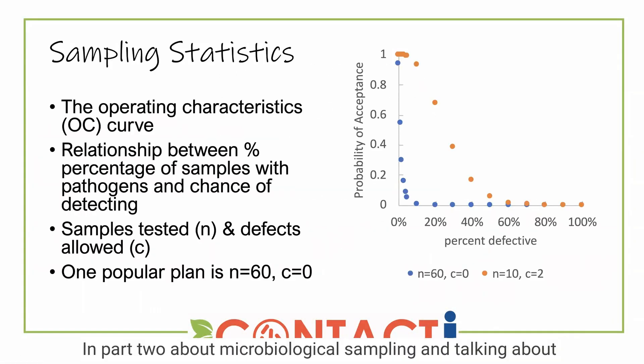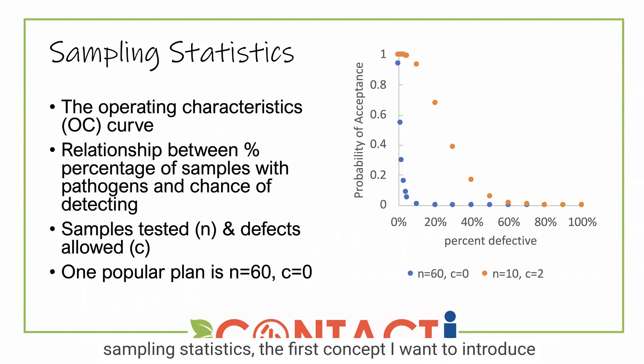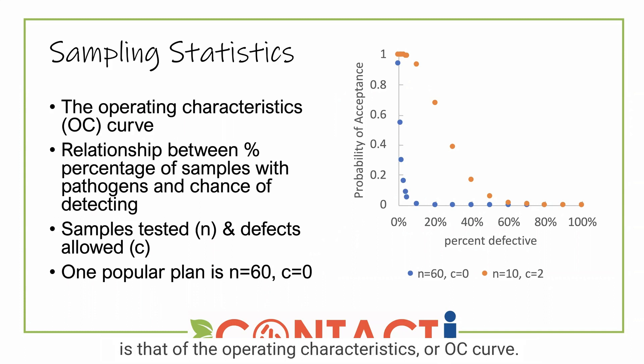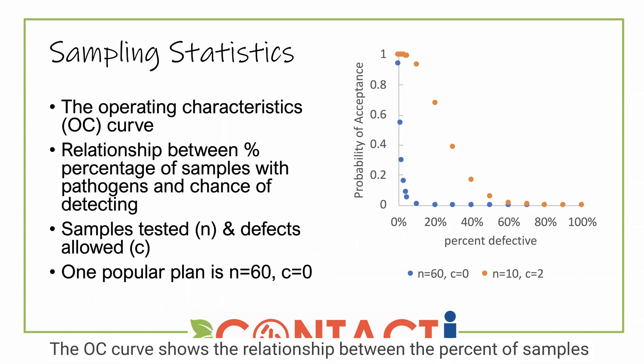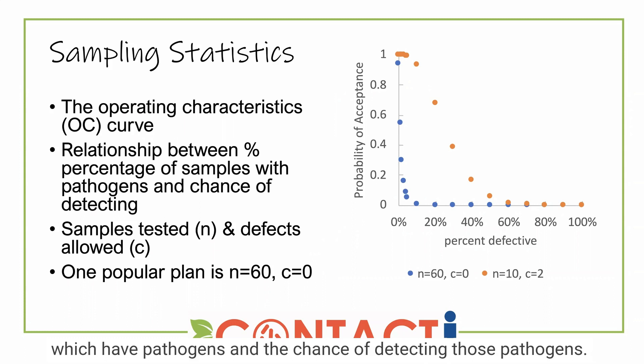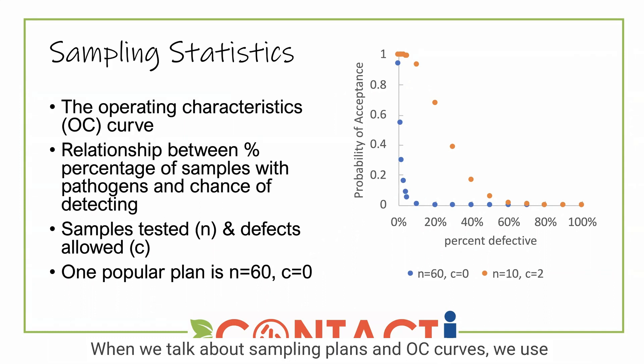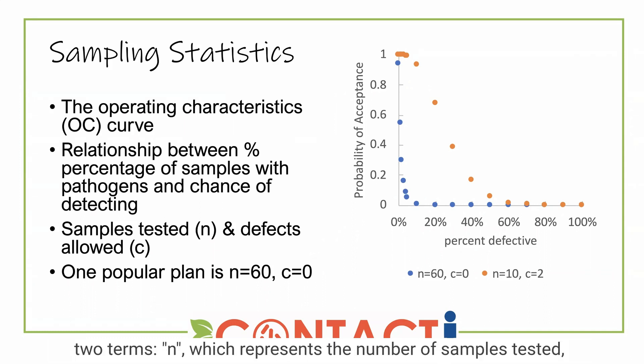In part two about microbiological sampling and sampling statistics, the first concept I want to introduce is that of the operating characteristics, or OC curve. The OC curve shows the relationship between the percent of samples which have pathogens and the chance of detecting those pathogens. When we talk about sampling plans and OC curves, we use two terms: N, which represents the number of samples tested, and C, which represents the number of defects allowed.